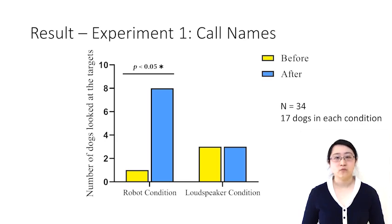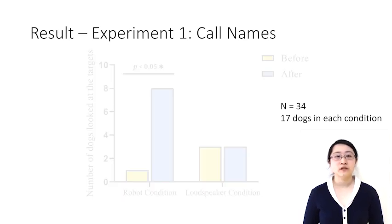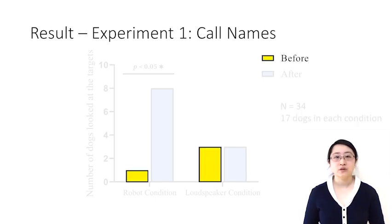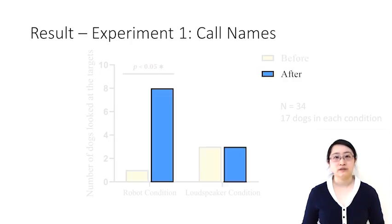Here are the results for experiment 1. We have 34 dogs in total, 17 in each condition. The yellow bar showed the number of dogs looked at the target before the names were called. The blue bar showed the number of dogs looked at the target after the name were called.